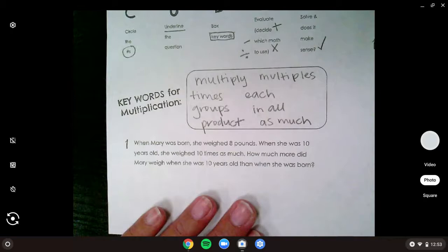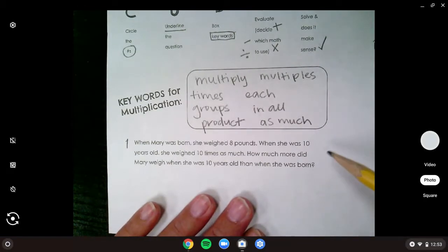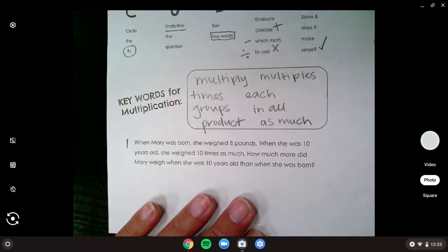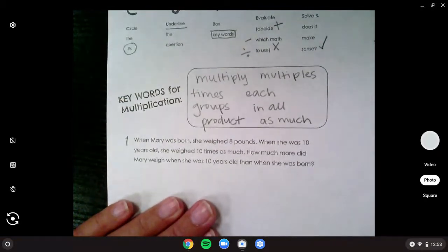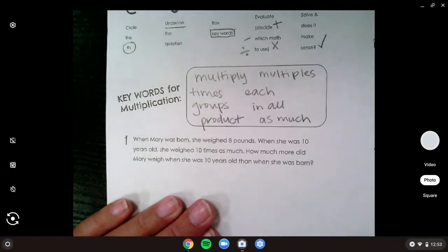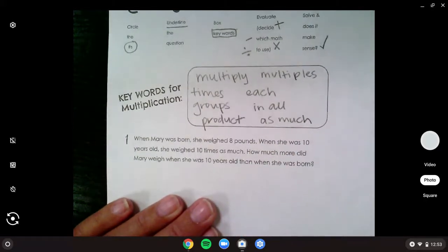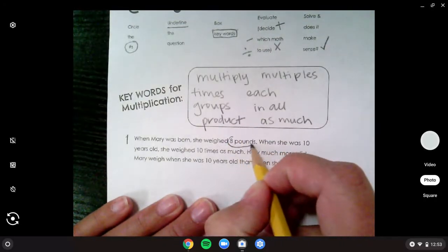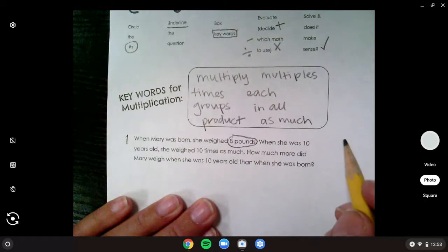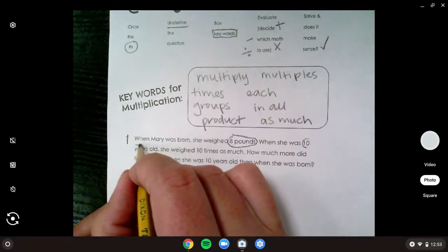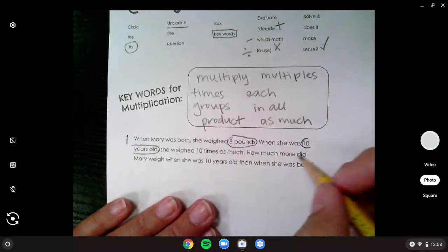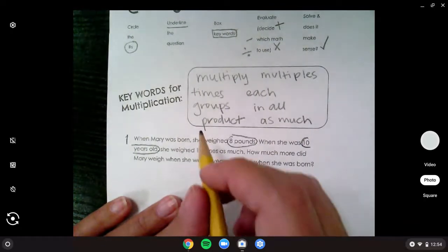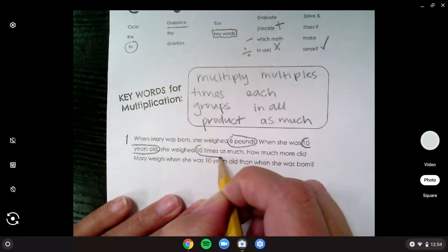Let's read through problem number one. When Mary was born, she weighed eight pounds. When she was ten years old, she weighed ten times as much. How much more did Mary weigh when she was ten years old than when she was born? So the first thing I need to do is my C, which is to circle my numbers. With my numbers, I also need to circle my labels because they're kind of joined together. So I need to circle eight pounds and I need to circle ten years old.